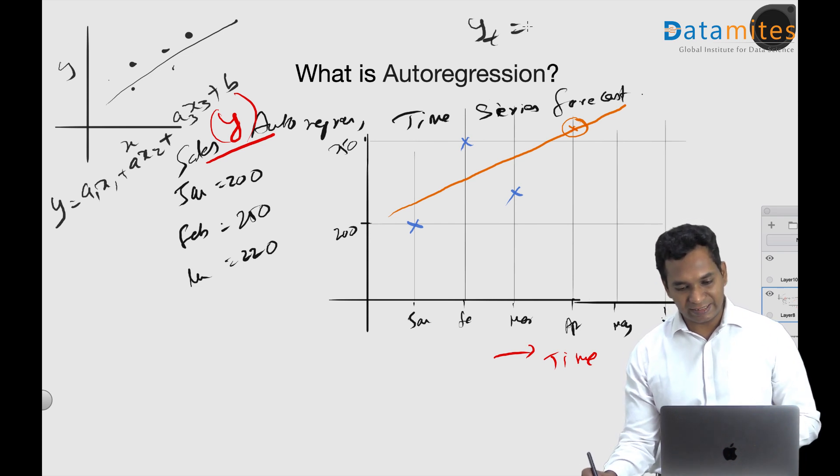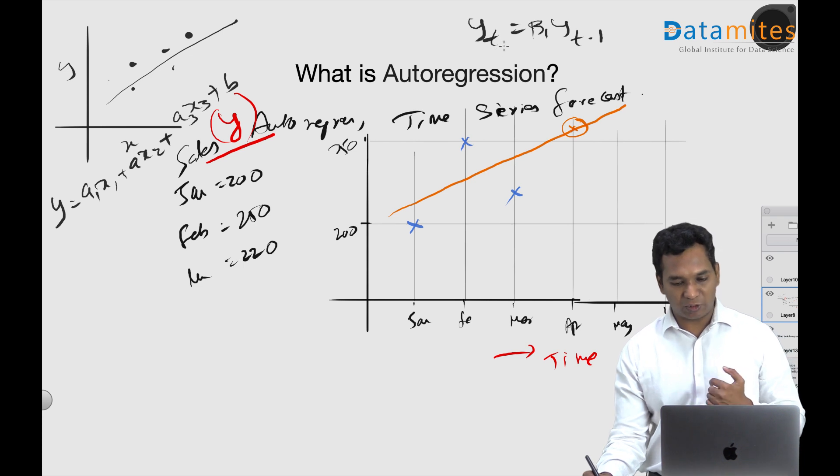In the case of autoregression, we have yt equals, let's say, beta 1 yt minus 1. So yt is, let's say, y of your April - April is a month, this is yt. And this becomes y of t minus 1, which is one time period before this.